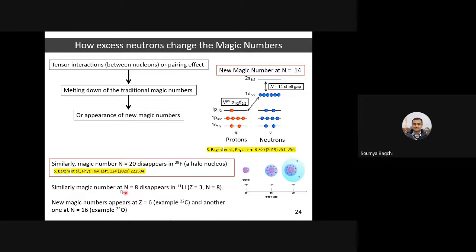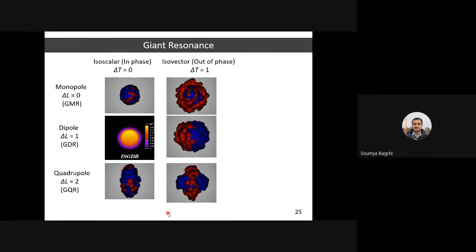Similarly, the N=8 magic number disappears in ¹¹Li; in ²²C a new magic number appears at N=6; and for ²⁴O there is another magic number at N=16. Going towards very exotic nuclei on the neutron-rich side of the nuclear chart reveals really interesting structural features.